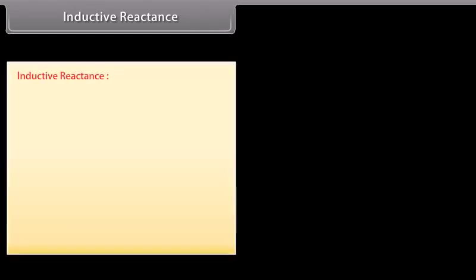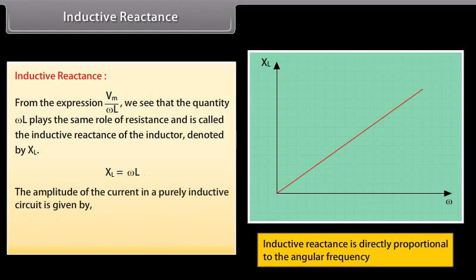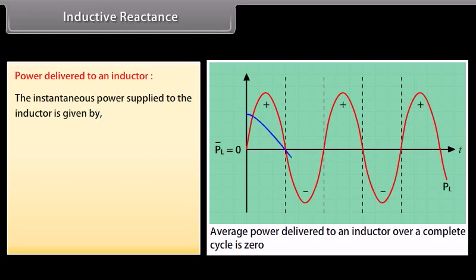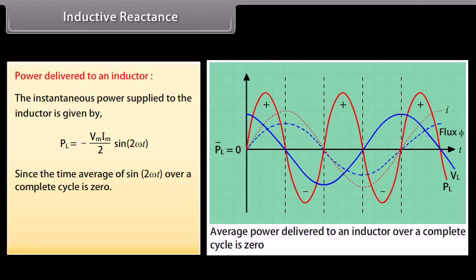Inductive reactance: from the expression Vm/(ωL), we see that the quantity ωL plays the same role as resistance and is called the inductive reactance of the inductor, denoted by XL. XL = ωL. The amplitude of the current in a purely inductive circuit is given by Im = Vm/XL. Power delivered to an inductor: the instantaneous power supplied to the inductor is given by -(Vm Im/2) × sin(2ωt). Since the time average of sin(2ωt) over a complete cycle is 0, therefore inductor power = 0.